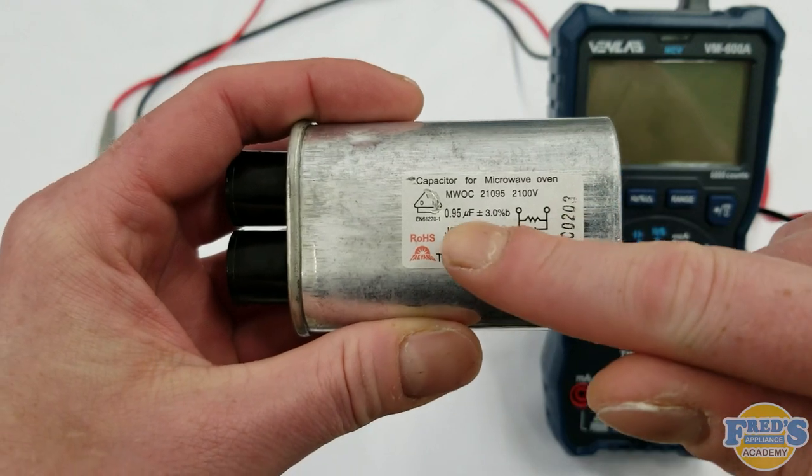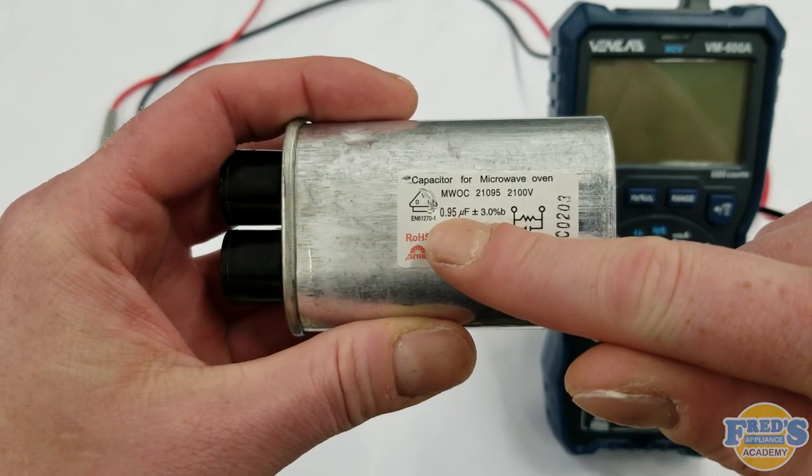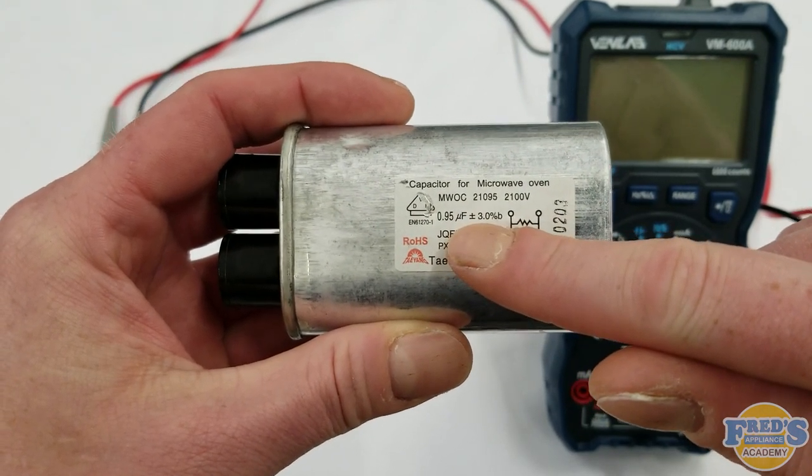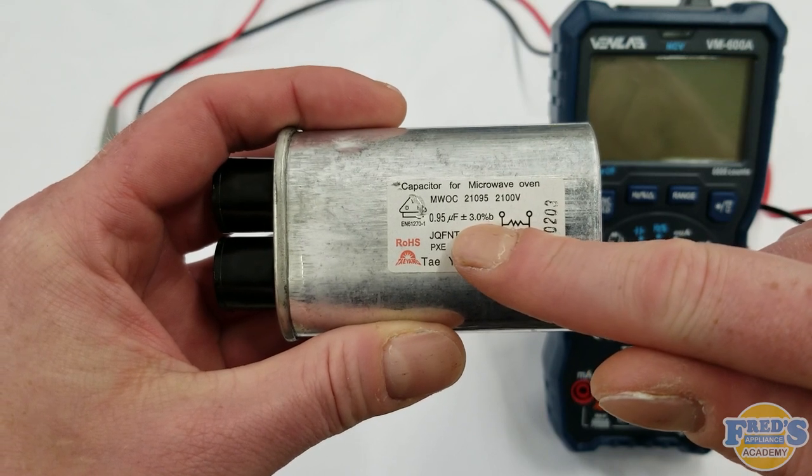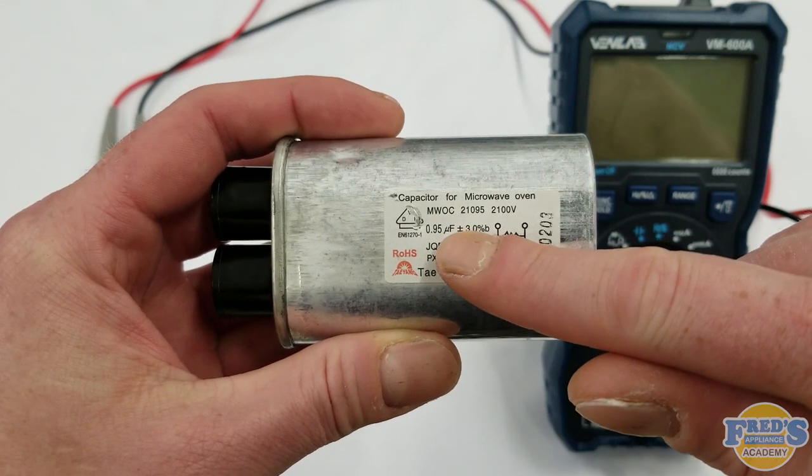Here's our microwave capacitor and we can see it's clearly labeled on the side 0.95 µF, standing for microfarad, and next to that plus or minus three percent. This means that its reading should fall within three percent of the 0.95.